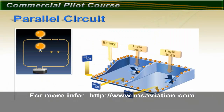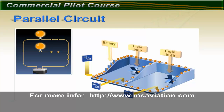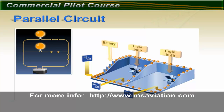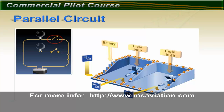The parallel circuit is used to overcome the problem of having one switch turn off everything. For example, if the radio used a series circuit, then anything else in the circuit would shut off if the radio was shut off. The parallel circuit has more than one path back to the battery. In this example, if the first light bulb is switched off, then it will turn off, but the second light bulb will remain unaffected. The second switch can turn that light off as well.